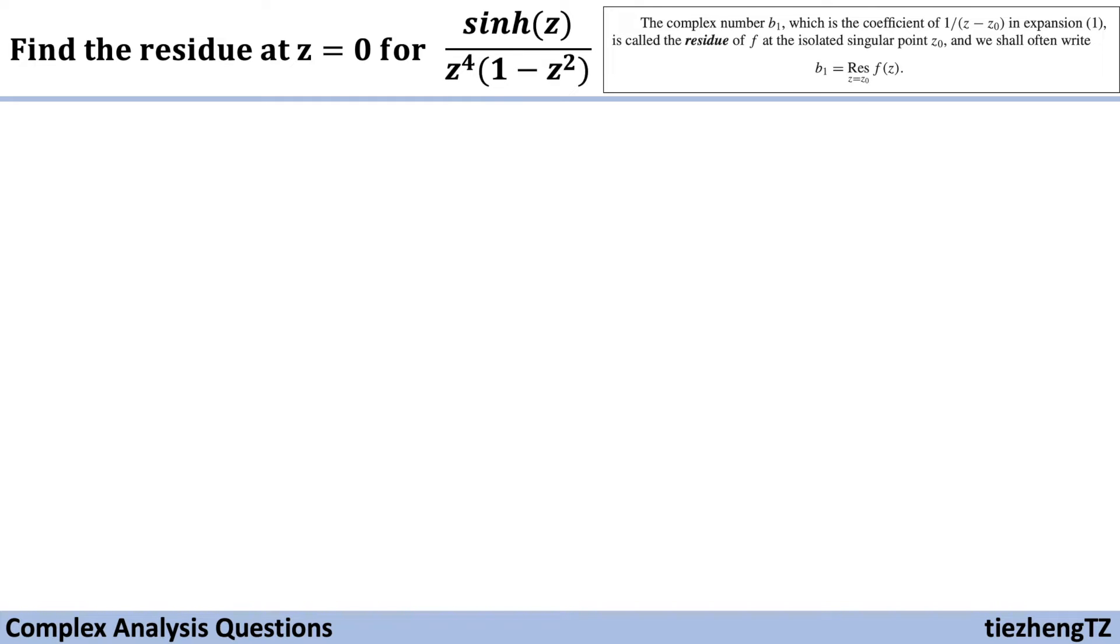So in our question, we need to find the residue at z equals zero, and we know z equals zero is the isolated singular point. So we just need to find the coefficient of 1 over z in the expansion form of this function.